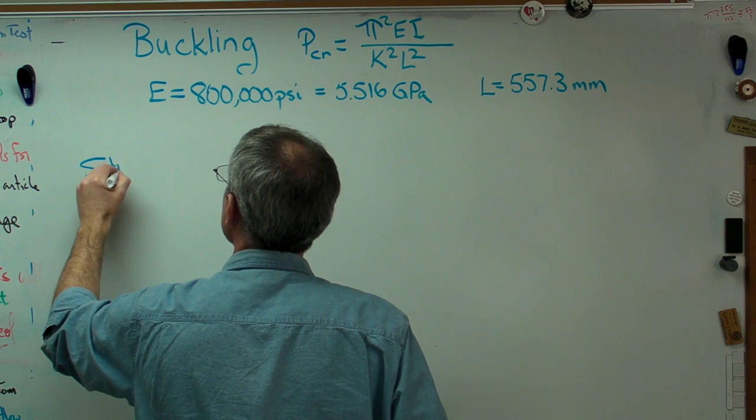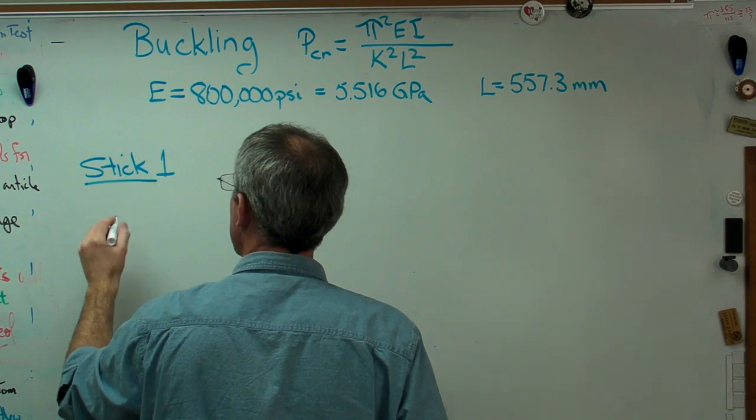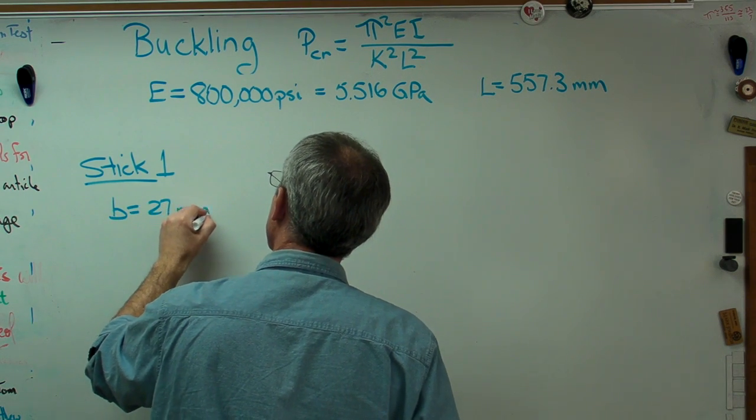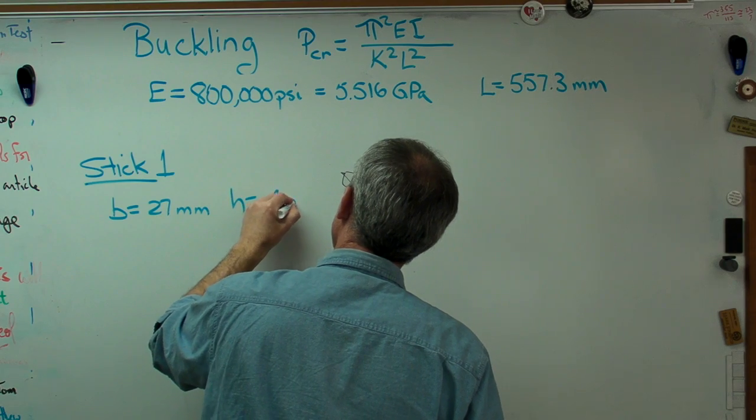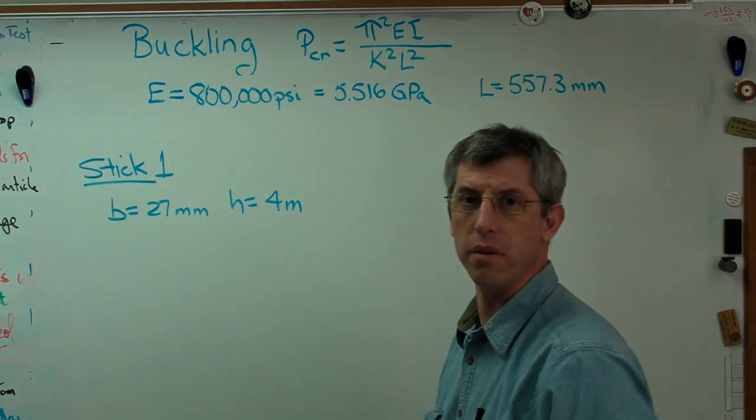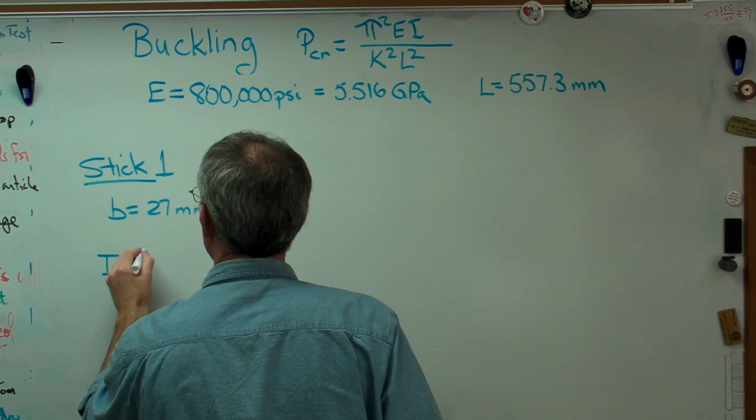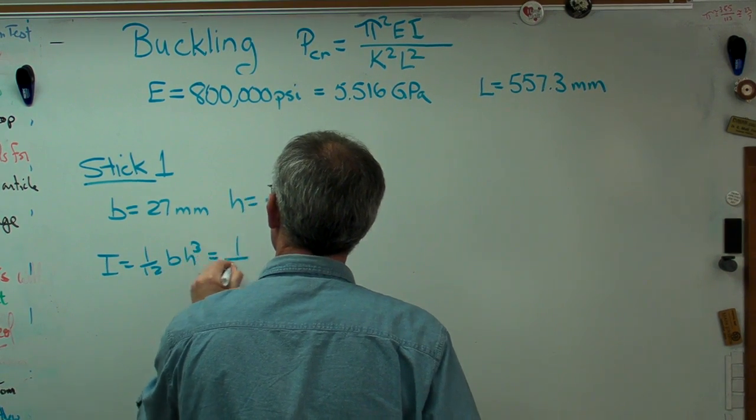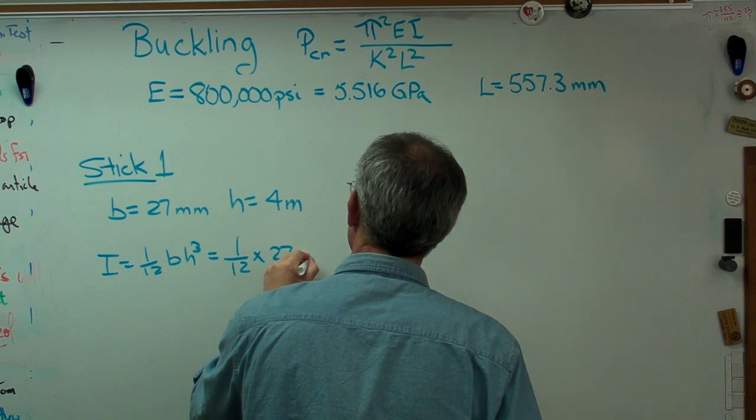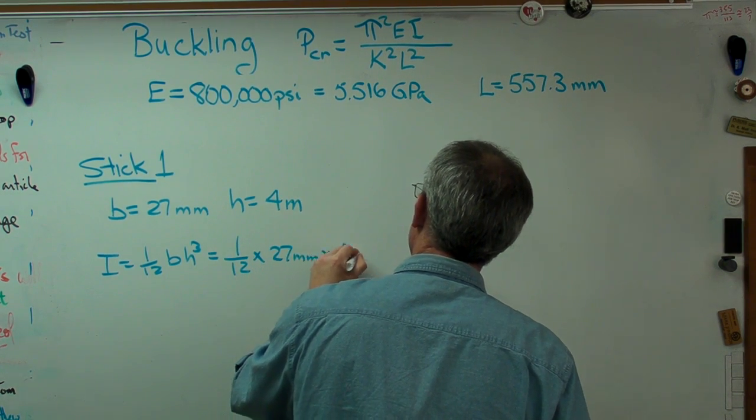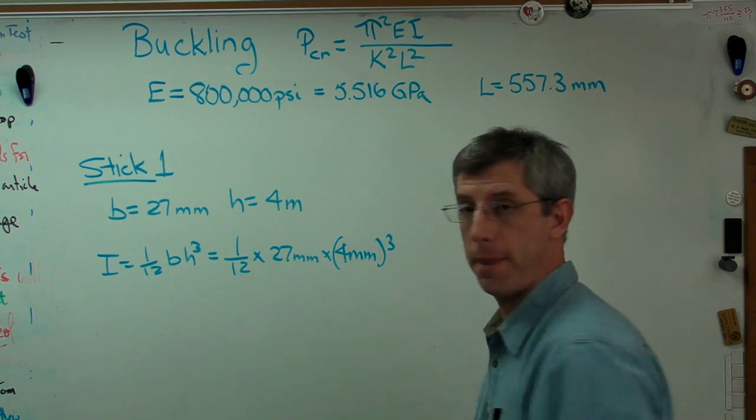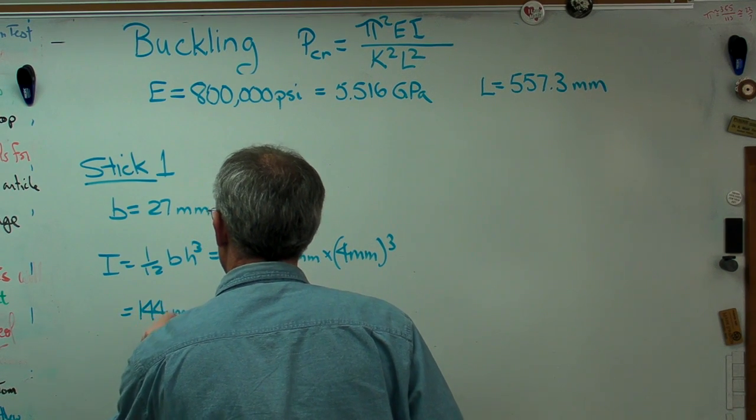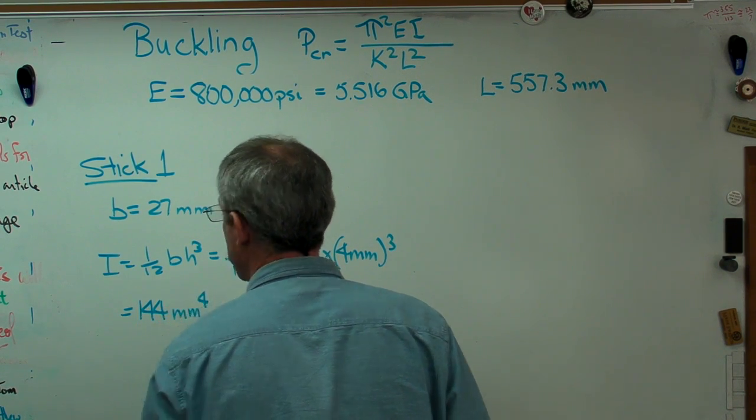I'm probably a little optimistic in how many significant figures I'm using. So let's look at the things that are different. Stick one, the one that's shaped like a ruler. The base is 27 millimeters, and the height is 4 millimeters. The area is 108 millimeters squared. I is 1/12 bh³, so that's 1/12 times 27 millimeters times 4 millimeters cubed. If you work that out, you get 144 millimeters to the fourth.